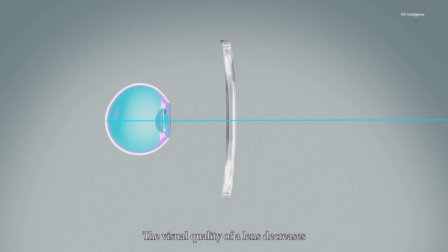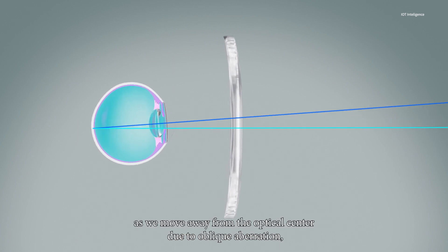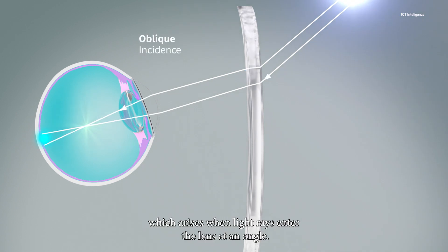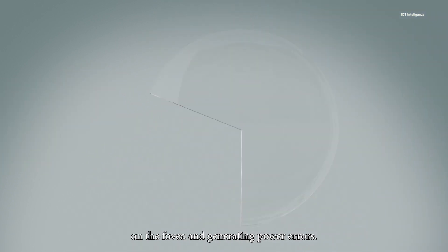The visual quality of a lens decreases as we move away from the optical center, due to oblique aberration which arises when light rays enter the lens at an angle. The light rays refract in the lens preventing them from focusing on the fovea and generating power errors.